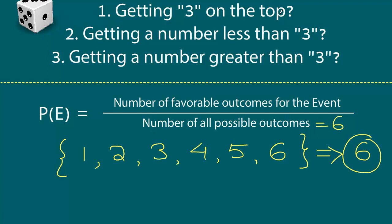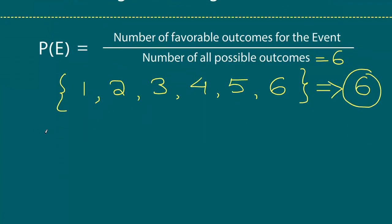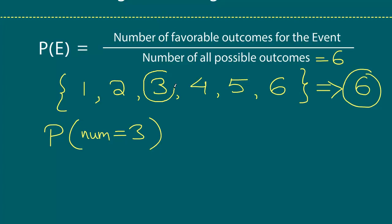Let's look at each event individually. For the probability of getting the number 3 on top, in order to get this outcome, how many outcomes are favorable? Only 1. So the number of favorable outcomes is 1, divided by the total number of outcomes which is 6. The probability is 1/6.